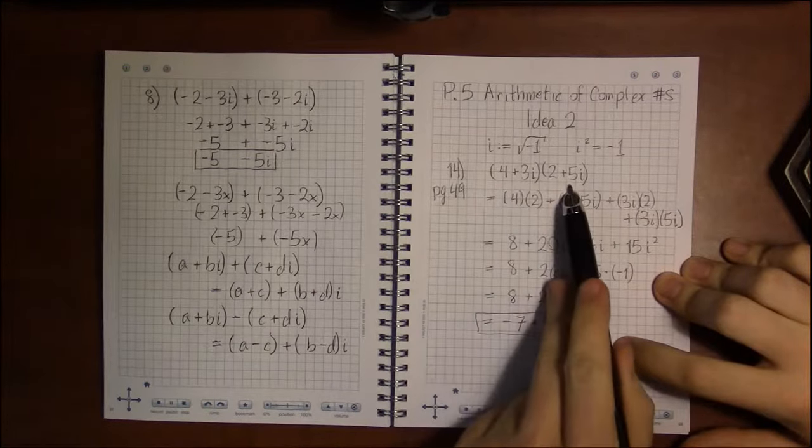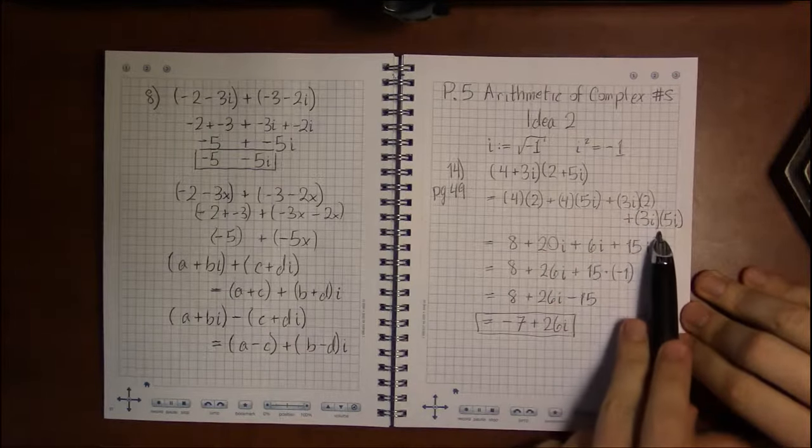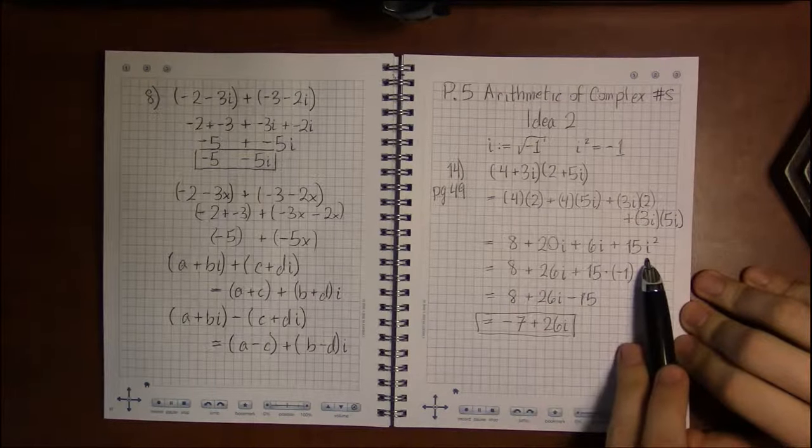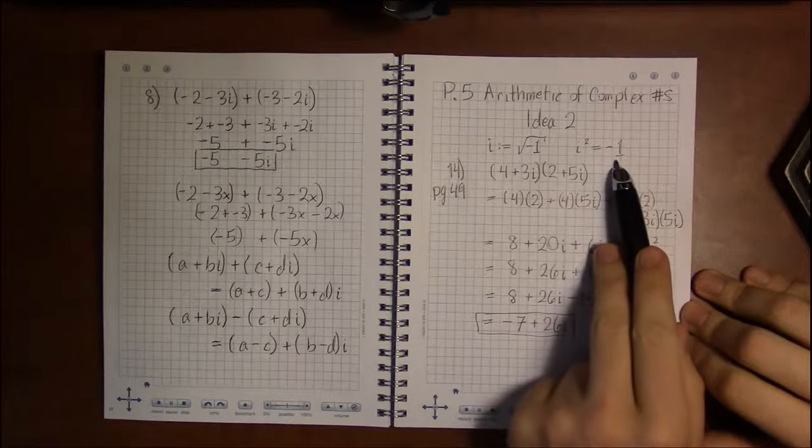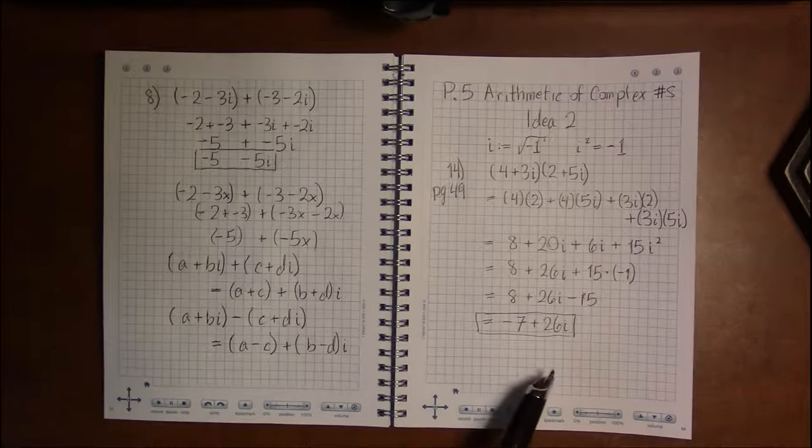All we're doing is distributing or foiling and keeping in mind that as we do this, i squared is negative 1. That's all there is to multiplication of complex numbers.